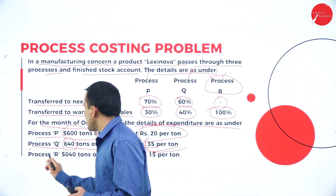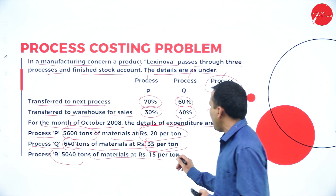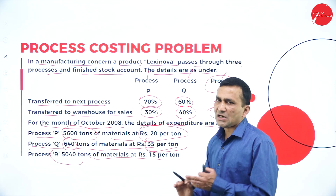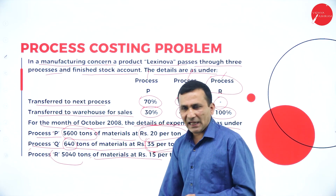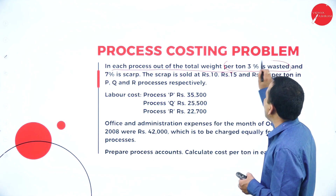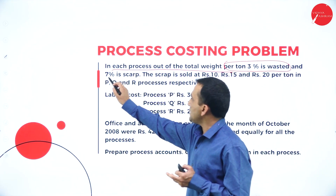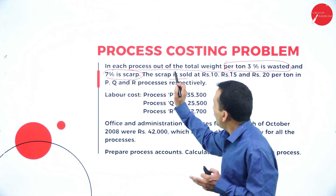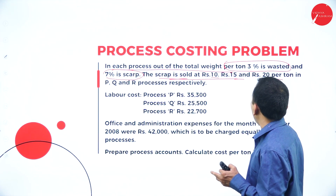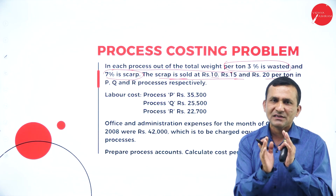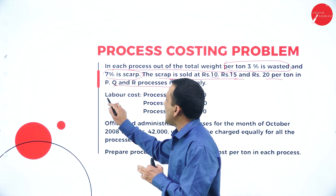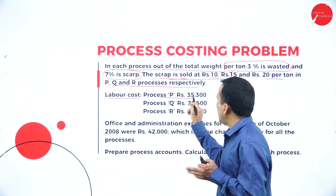From Process P, 5,040 tons are transferred at ₹15 per ton, brought down into the next process. In each process, out of the total weight, 3 percent is treated as normal wastage and 7 percent is scrap. The scrap is sold; the scrap value given is ₹10 for Process P, ₹15 for Process Q, and ₹20 for Process R. For normal loss, we only calculate 3 percent on units — no cost per unit is given.